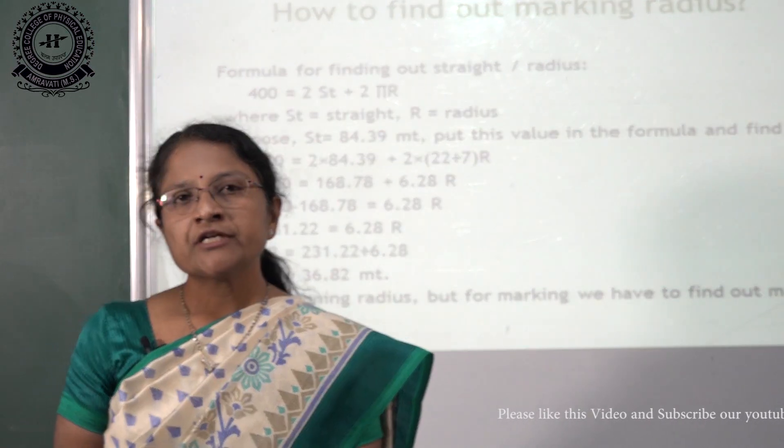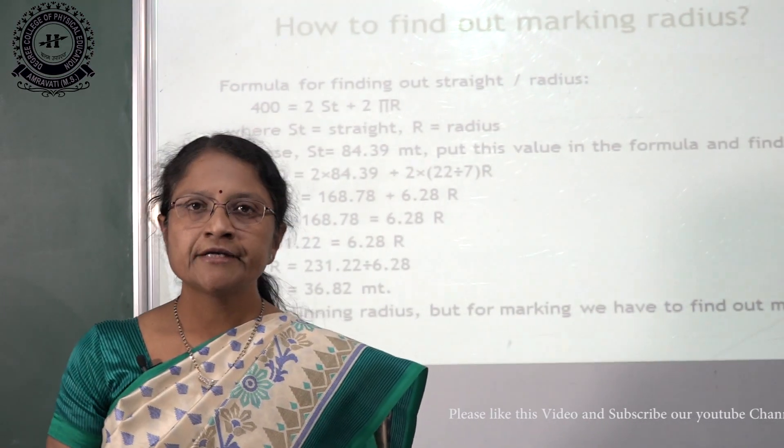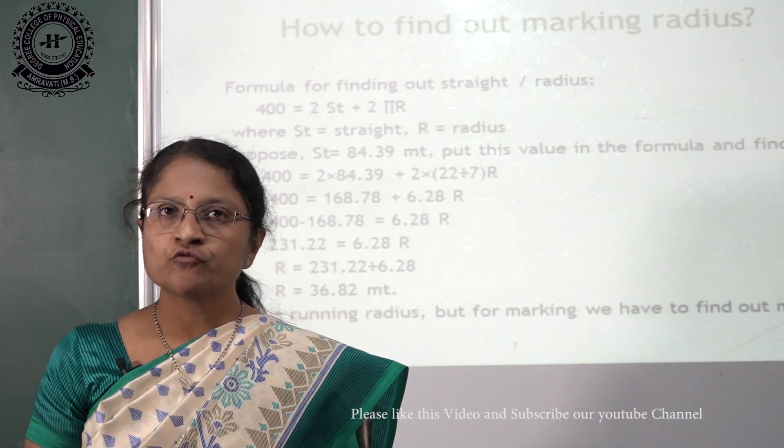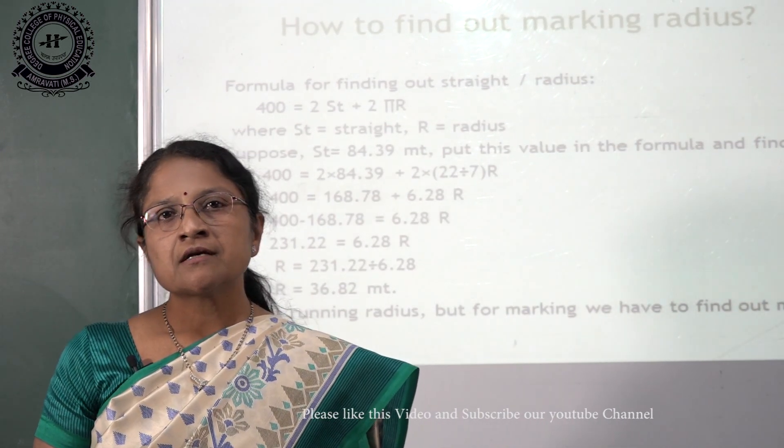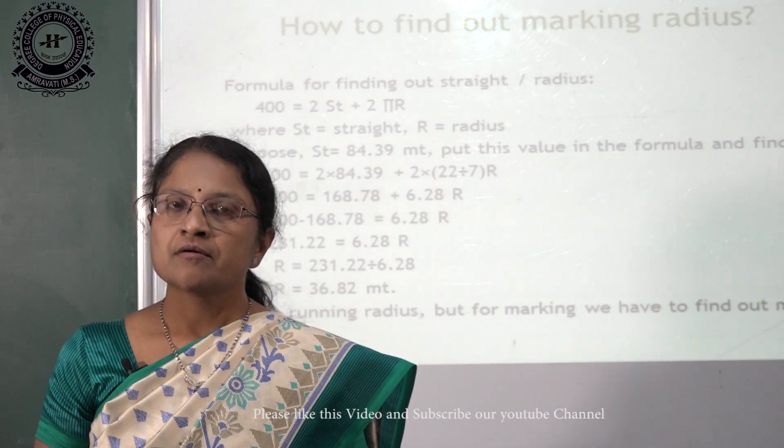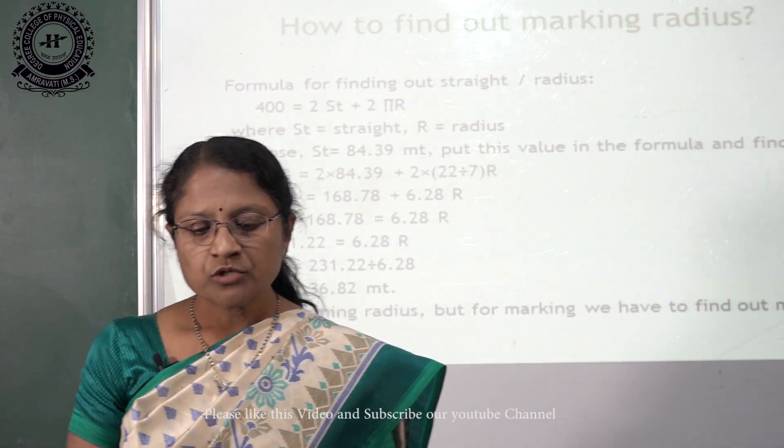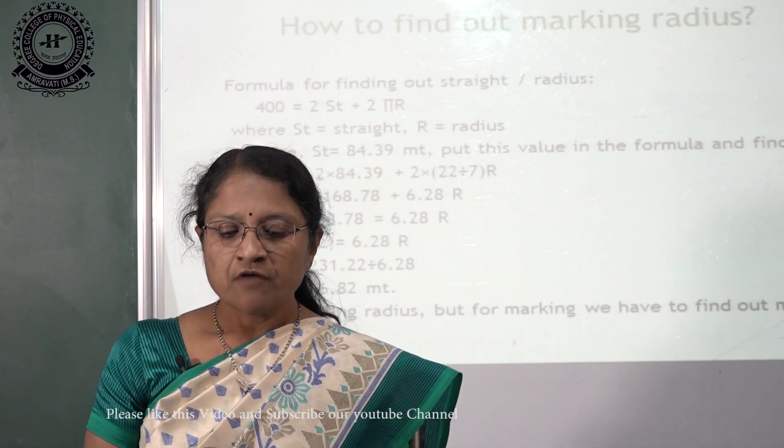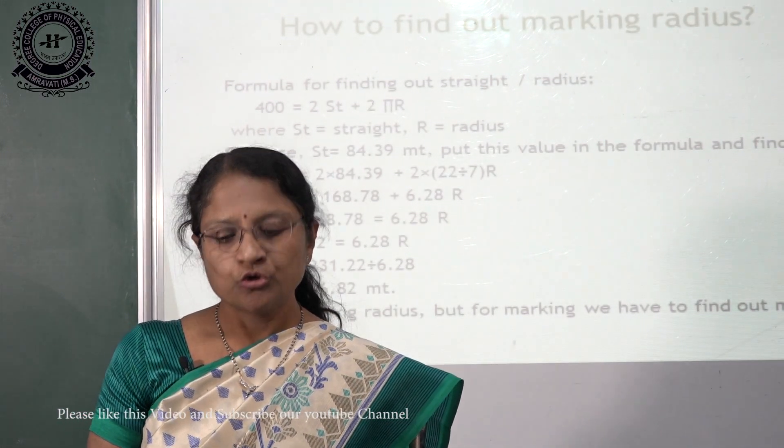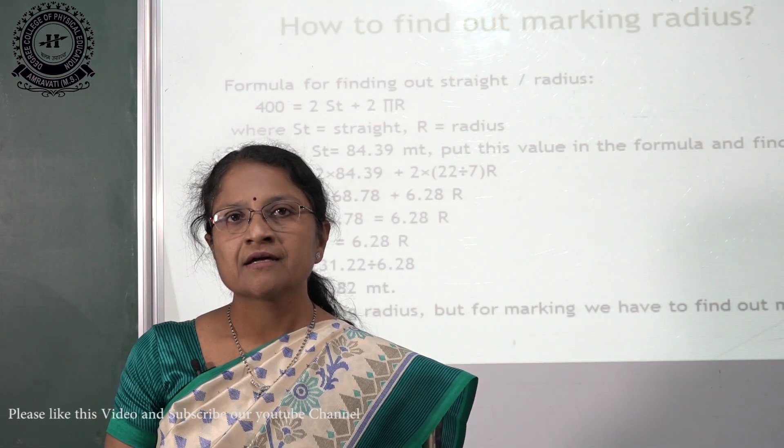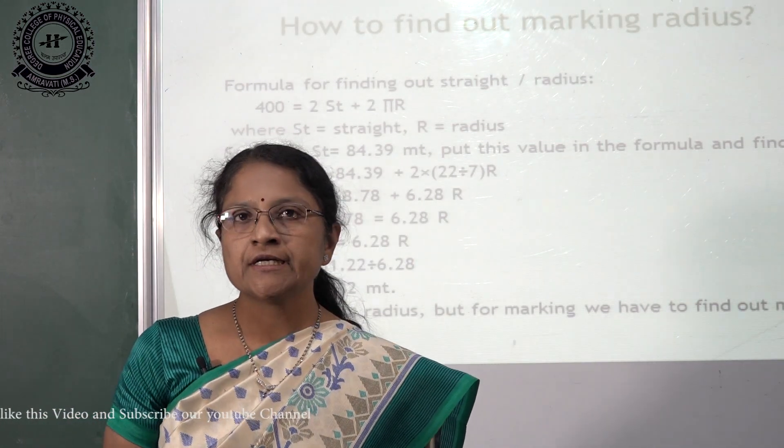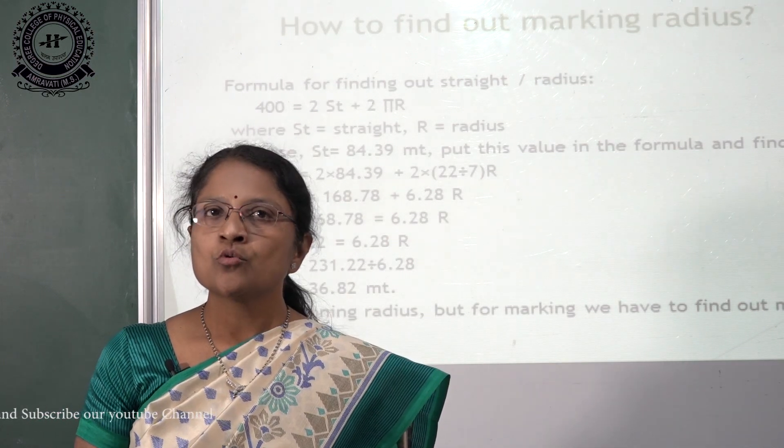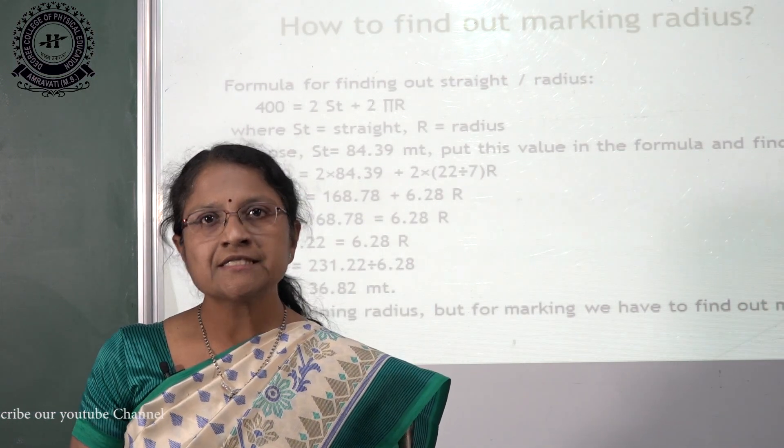Now about its straight and radius. Before marking of track, we have to find out either straight or radius. Suppose we see this formula: 400 equals 2st plus 2πr. It means 400 meter track contains 2 straights and 2 radius, that is circumference.